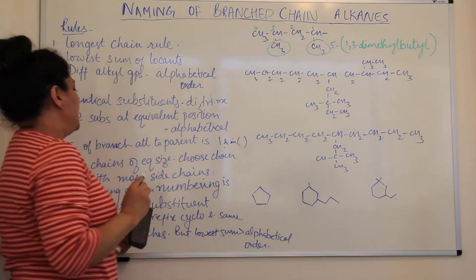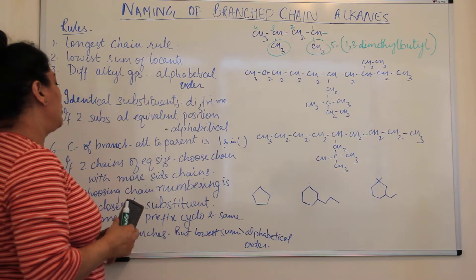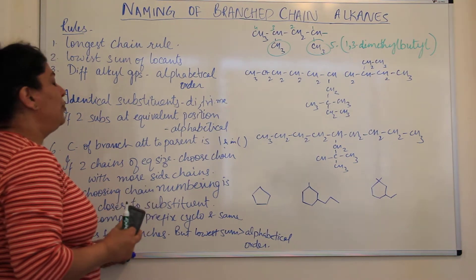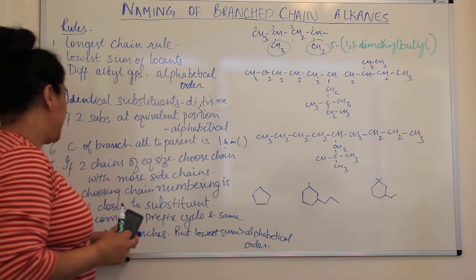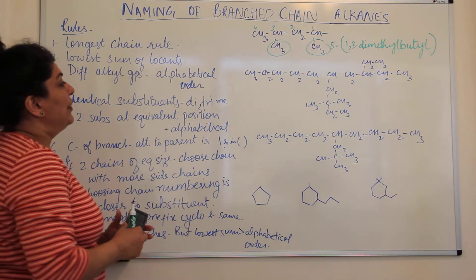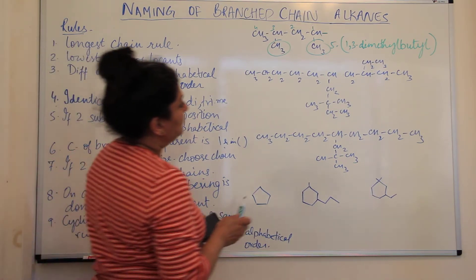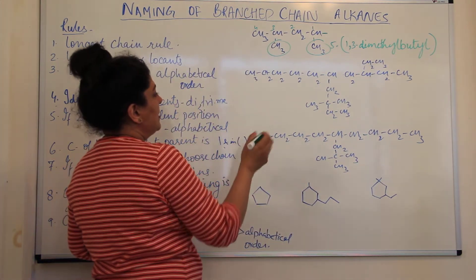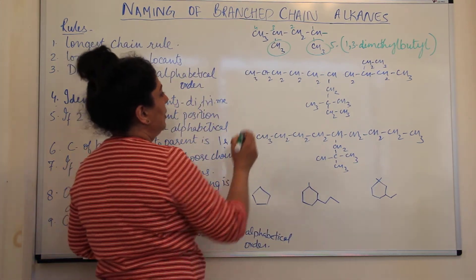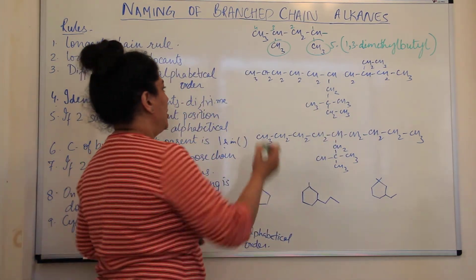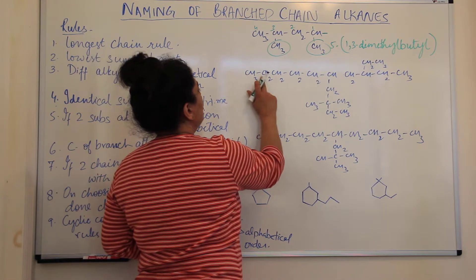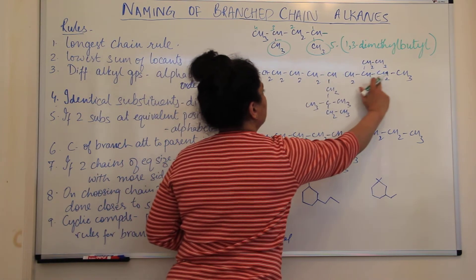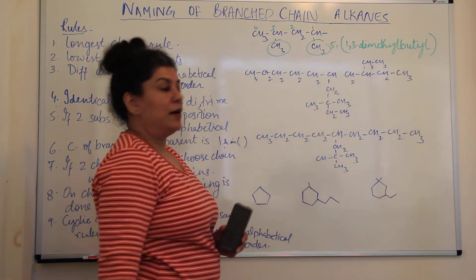Rule number seven is that if two chains are of equal size, then we choose the chain which has more number of side chains. For example, take a look at this hydrocarbon. Let us find out the longest chain. Counting one way gives us 10 carbons; counting another way also gives 10 carbons. So this hydrocarbon is a decane, but it can be a decane in two different ways. Which one do we choose as the parent chain?